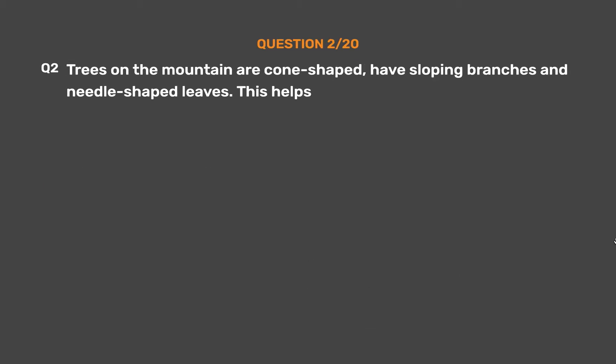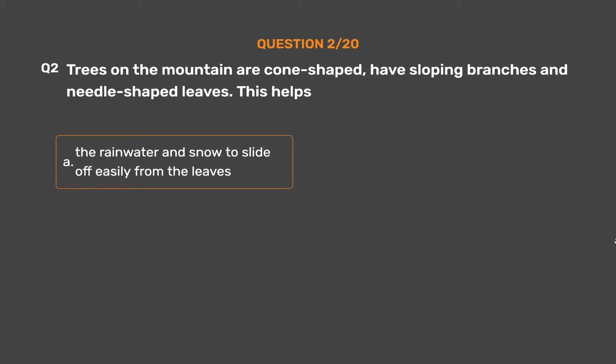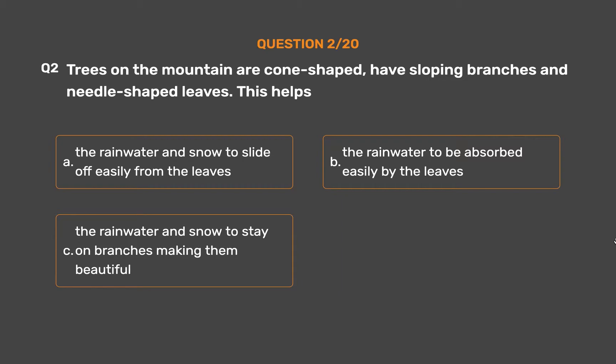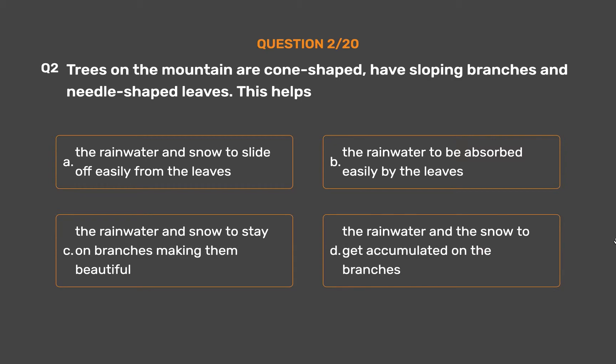Question number 2. Trees on the mountain are cone-shaped, have sloping branches and needle-shaped leaves. This helps: Option A: the rainwater and snow to slide off easily from the leaves. Option B: the rainwater to be absorbed easily by the leaves. Option C: the rainwater and snow to stay on branches making them beautiful. Option D: the rainwater and snow to get accumulated on the branches.